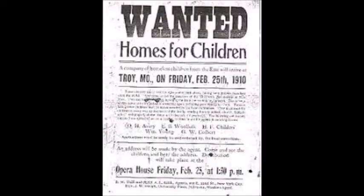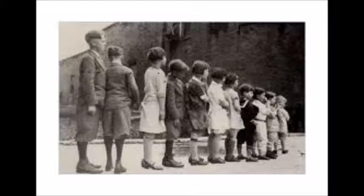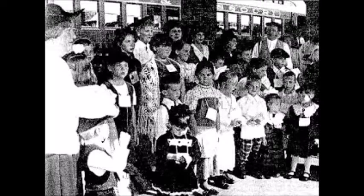There were two ways in which people got children from the orphan trains. The Foundling Hospital put notices in newspapers around the Midwest and people would write a description of the child they wanted. The CAS had the children line up by height order on a train platform or city hall. Then farmers or whoever came would often check the children with similar tests to slave auctions because they wanted strong children for labor. The term 'orphan train' is actually misleading due to the fact that less than half of the children who rode the trains were orphans. About 25 percent had two living parents.